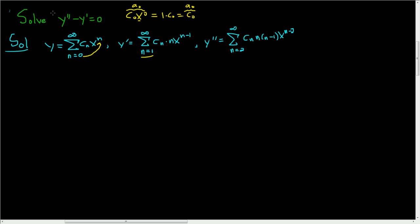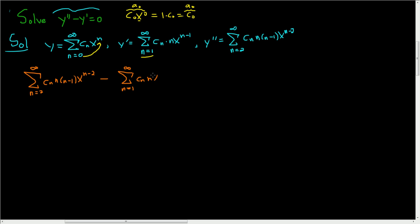After taking derivatives, we plug everything back into the differential equation. So we get the infinite sum from two to infinity of c sub n times n times (n minus one) times x to the n minus two, minus the infinite sum starting at one to infinity of c sub n times n times x to the n minus one, and this equals zero.